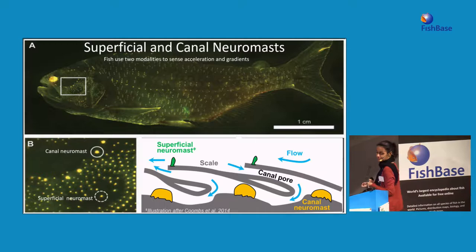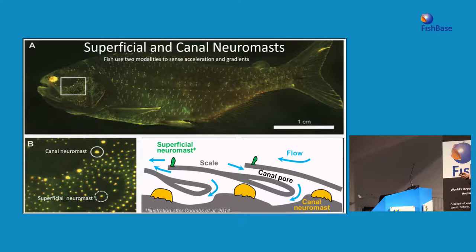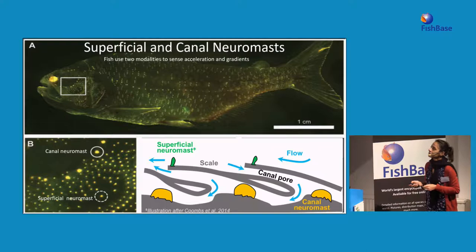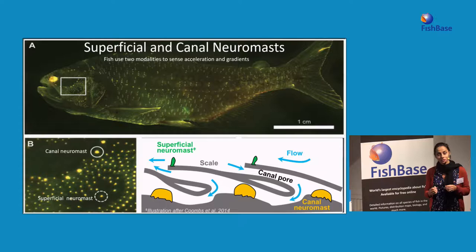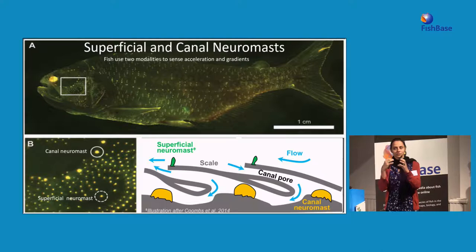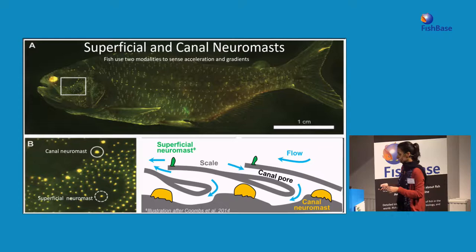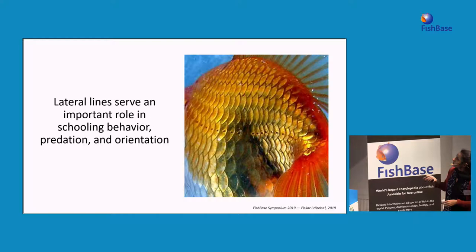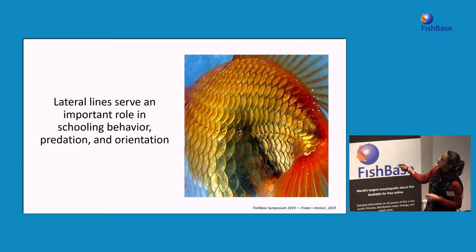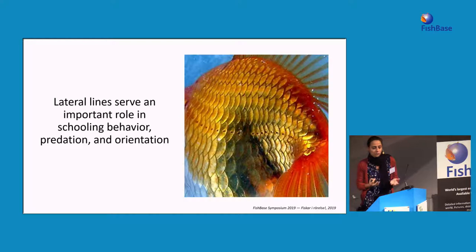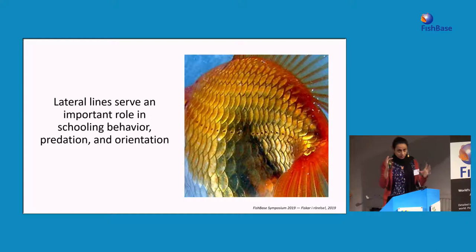The canal neuromasts mainly exist along the lateral line and in the head. This is an example of the lateral line in a goldfish — you can see the canal neuromasts in these openings. The lateral line is one of the key sensory systems of the fish and is very important for schooling behaviour, orientation, and predation.